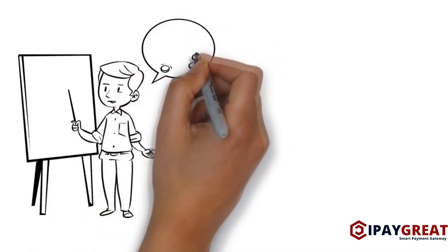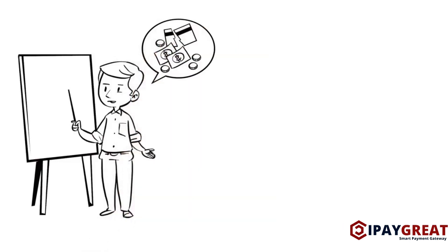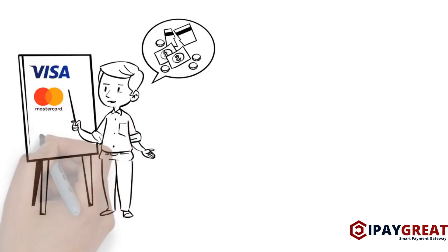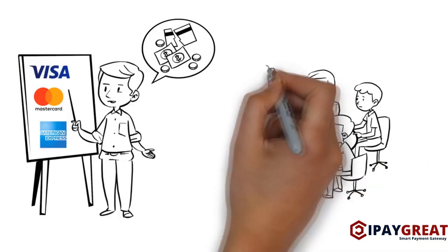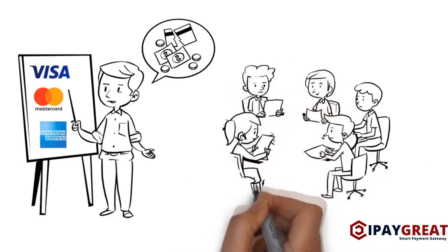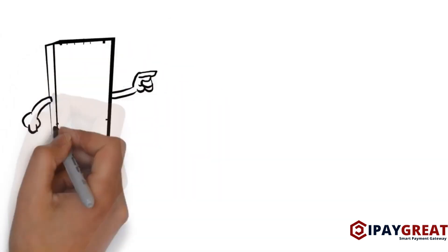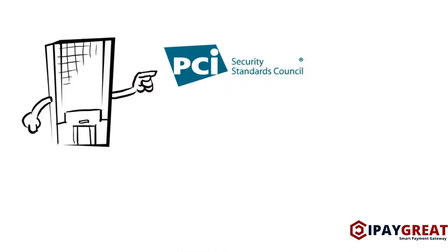Everything started when the credit card companies began having a significant increase in fraud. Different credit card companies including Visa, MasterCard, American Express and others decided to create a council to create and enforce an international security standard applicable to the credit card industry. That is when the credit card companies created the Payment Card Industry Security Standards Council.